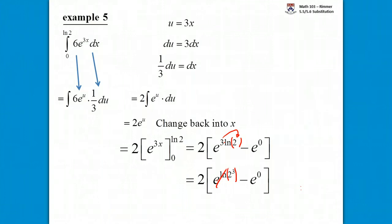2 cubed is 8. And so that's just another way to say 8. e to the 0 is just 1. So we have 8 minus 1. And then don't forget about the 2 that's on the outside. So the final answer, 8 minus 1 is 7, 7 times 2. Final answer is 14.